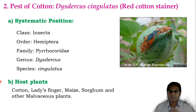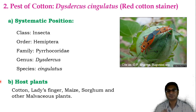The host plants where the red cotton stainer attacks include cotton, lady's finger, maize, sorghum, jute, and other malvaceous plants.